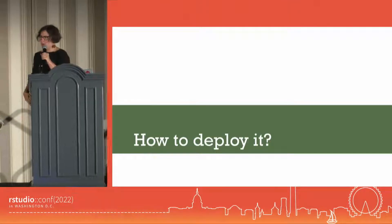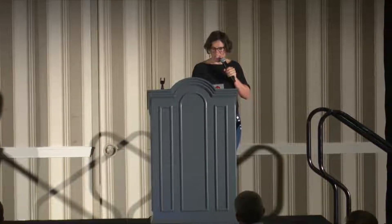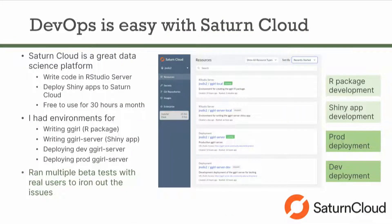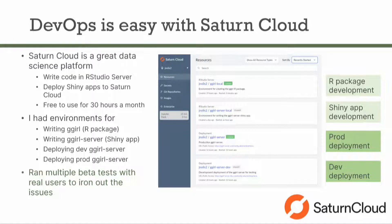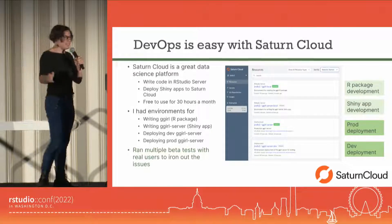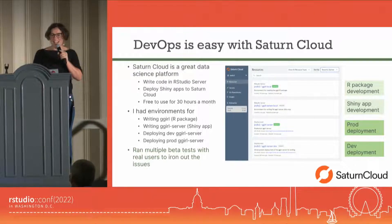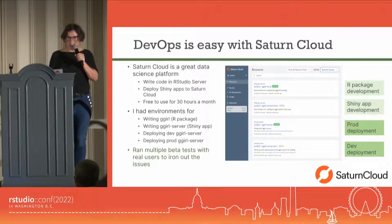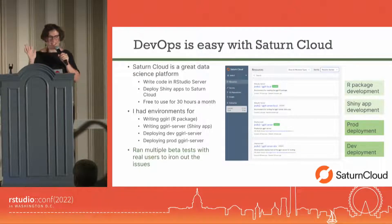Lastly, how do you deploy it? The GGIRL Shiny server had to be continuously running somewhere. It's currently running on Saturn Cloud — I'm the chief product officer of the company, so that was convenient. I had two RStudio servers running in Saturn Cloud: one for development of the Shiny package, one for developing the Shiny backend. I also had two Shiny servers running on Saturn Cloud: the actual production server you saw, and a development one where I could test with fake credit cards and fake emails. So four systems all running on Saturn Cloud. And importantly, I beta tested with a bunch of people to iron out usability issues.